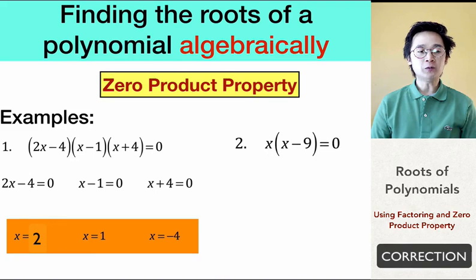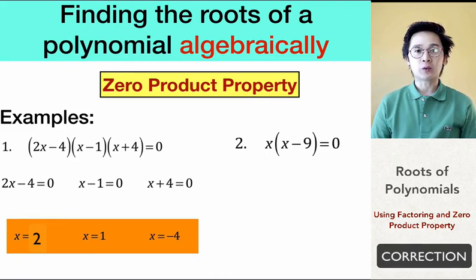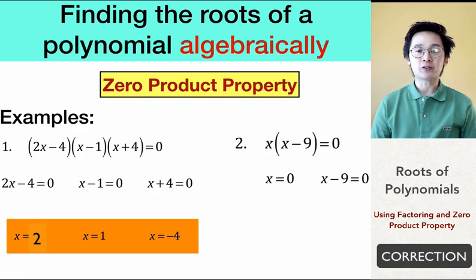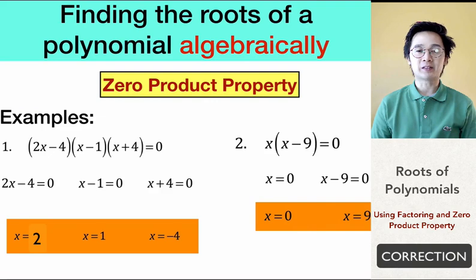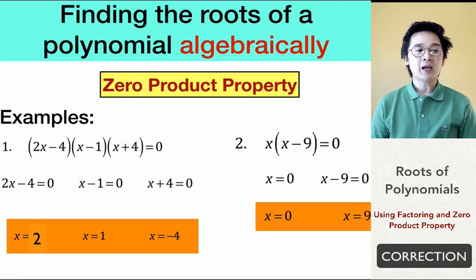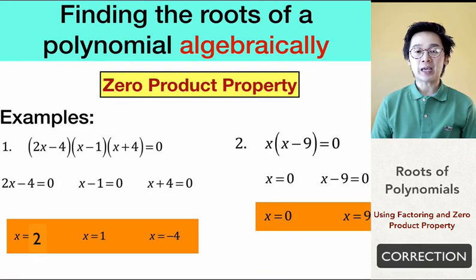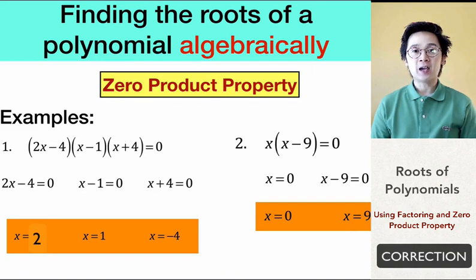For problem number two, we have x(x − 9) = 0. It's also in factored form, so we use the zero product property and separate the two factors. We get x = 0 and x − 9 = 0, giving roots x = 0 and x = 9. These examples are easy to solve because the polynomials are already in factored form.